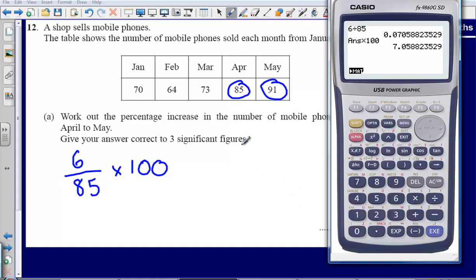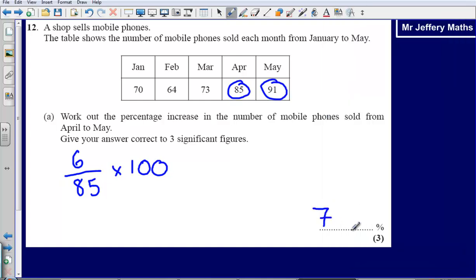Now we're asked to give it to three significant figures. So to three significant figures it's going to be 7.058. 8 is above 5, so it's going to be 7.0, we round 5 up to the next number, so 7.06. Our answer here is going to be 7.06.